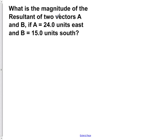What is the magnitude of the resultant of two vectors A and B if A equals 24 units east and B equals 15 units south?